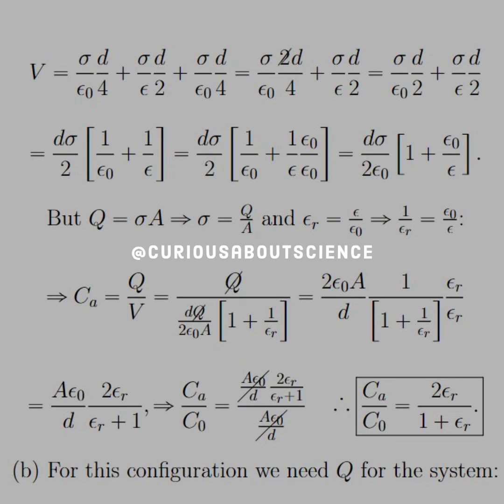with which we can substitute in now that we have the proper form. So the capacitance for the configuration A, C_A, is equal to Q over this potential that we just found. Substituting in the potential, we see that we immediately get cancellations of Q, and we're left with this relationship here.